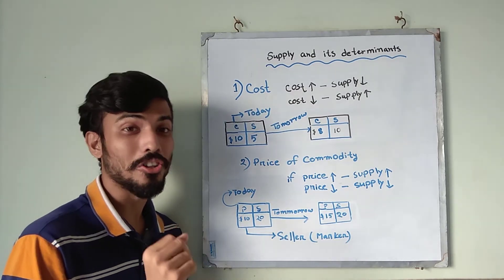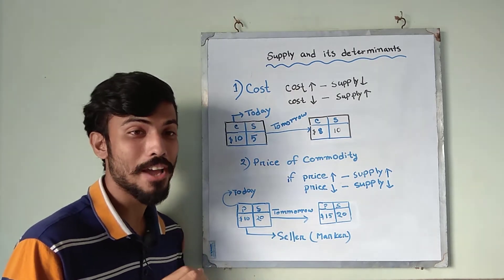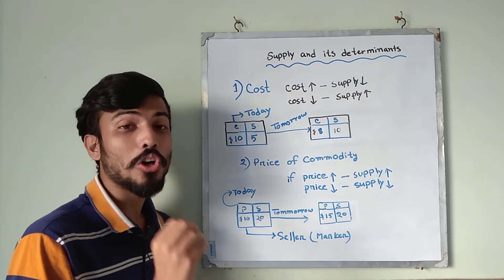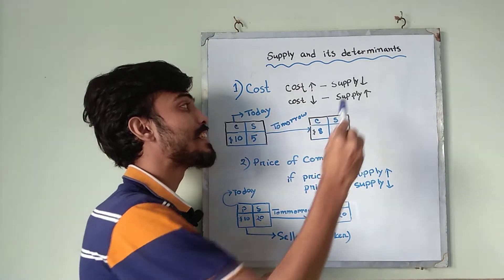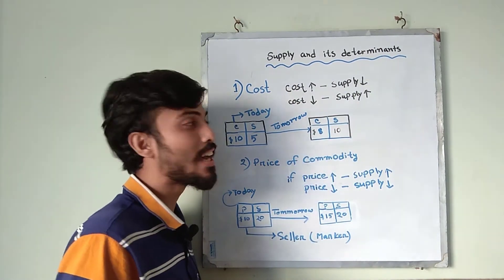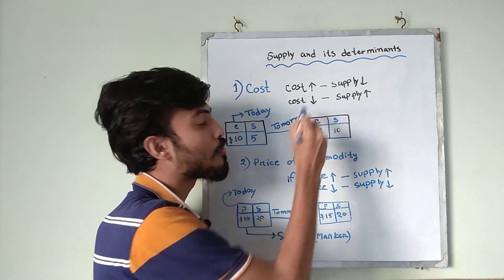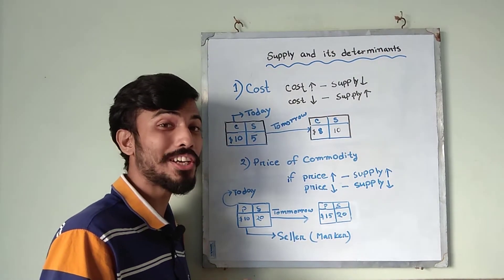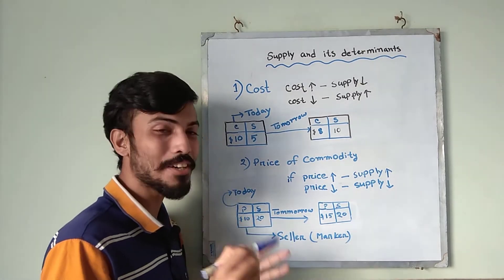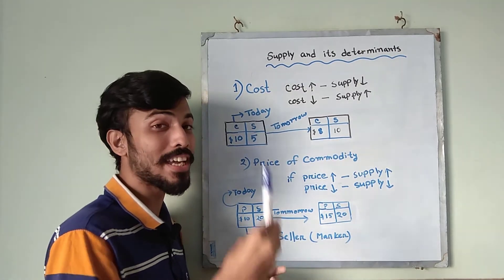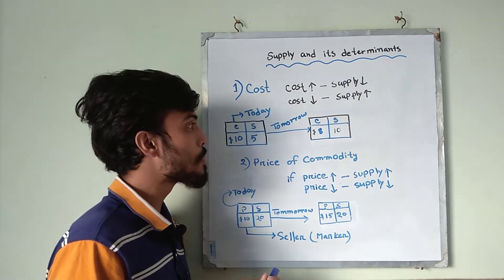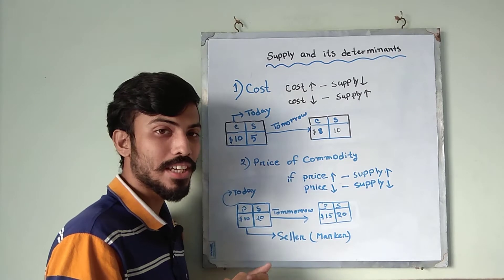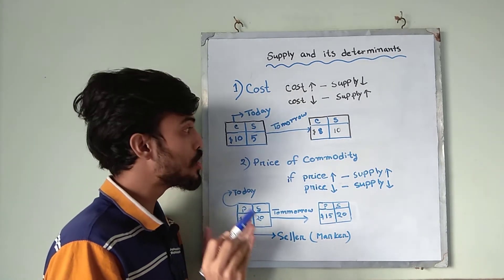The first element is cost. Cost affects supply — if the cost of the product increases then supply will decrease, and if the cost decreases then supply will increase. For example, you are a seller and you produce markers. Today the cost of each marker is $10 and you agreed to supply five units.